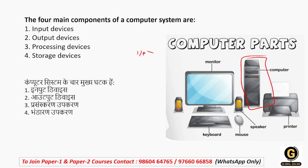CPU ना input device है ना output device। CPU को बोला जाता है brain of computer, यानि की computer का दिमाग। जैसे हम हाथों से लिखते हैं लेकिन instructions दिमाग देता है, वैसे ही computer में चाहे printer से printout निकलवाएं, monitor में कुछ चलाएं — इन सारी चीजों के पीछे CPU होता है।